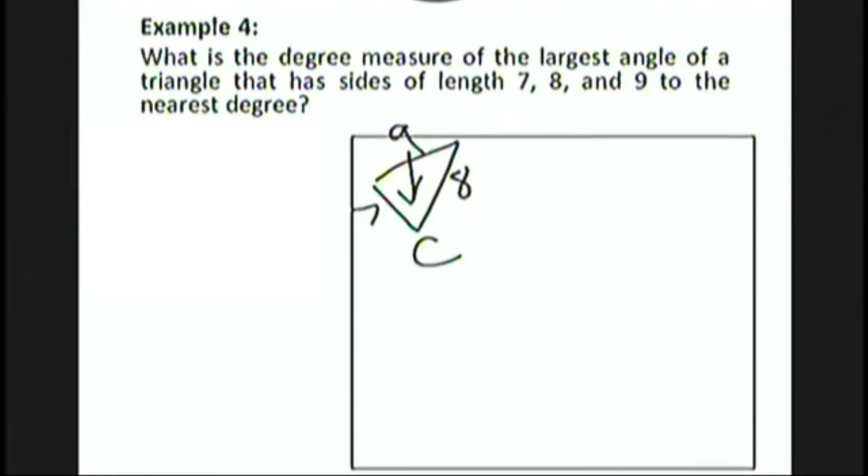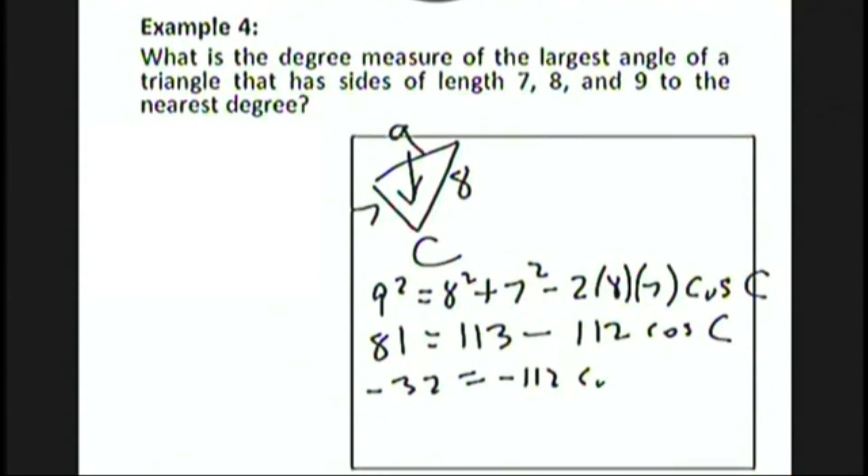Now we use the law of cosines. We have 9² = 8² + 7² - 2(8)(7)cos C. We need to get C by itself. So let's simplify. We have 81 = 113 - 112 cos C, since 64 + 49 is 113 and 2(8)(7) is 112. Subtract 113 from each side to get -32 = -112 cos C.